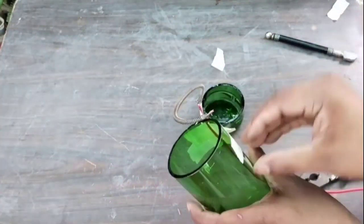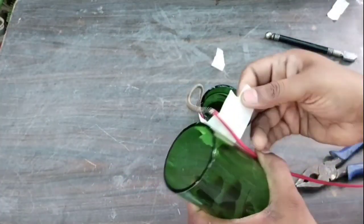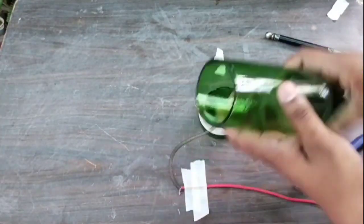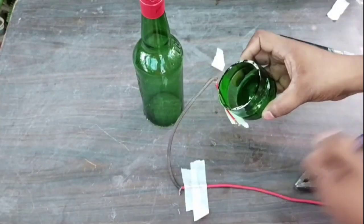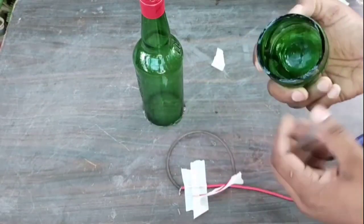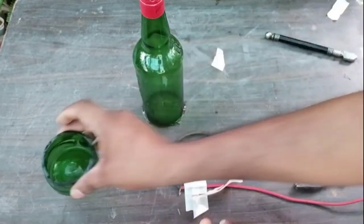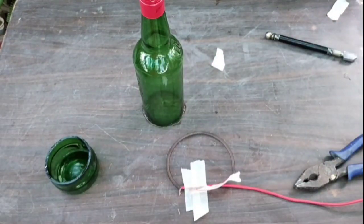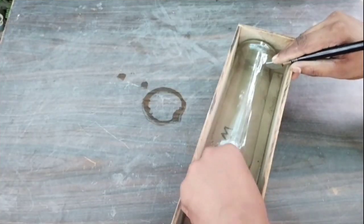Here you can see that the bottle is cut with a lot of finishing. After cutting, the edges of the bottle will be greased with sandpaper because after cutting, the edges of the bottle become very sharp, which can cause cuts in the hands.